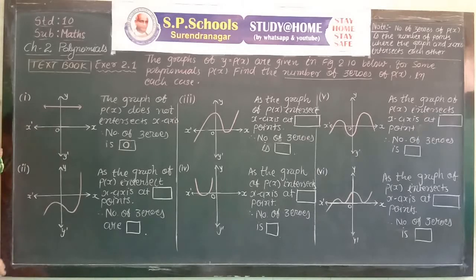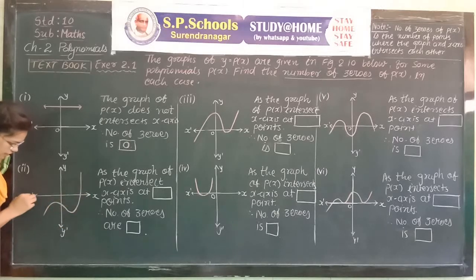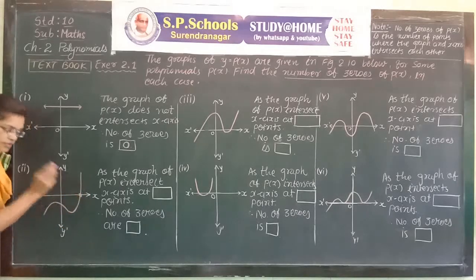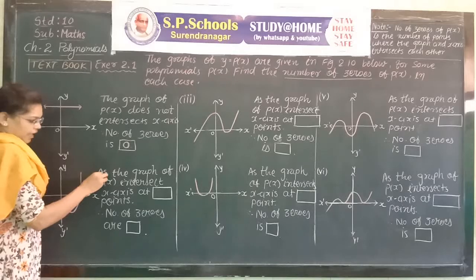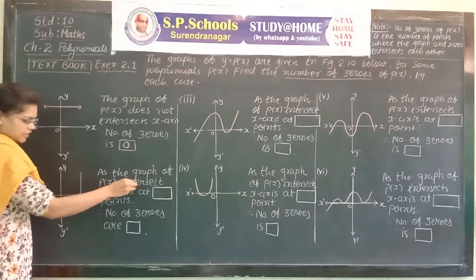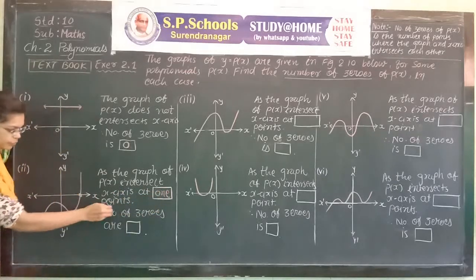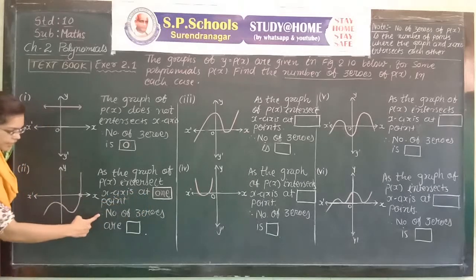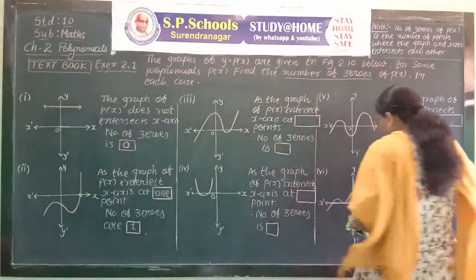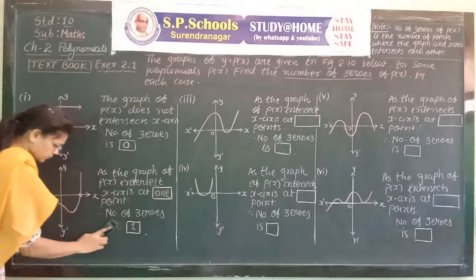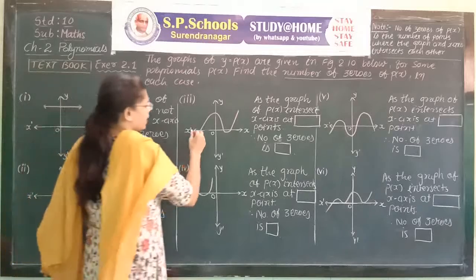See the next figure. The graph and x-axis intersect each other at a single point. Therefore, as the graph of P(x) intersects the x-axis at one point, the number of zeros is only one.